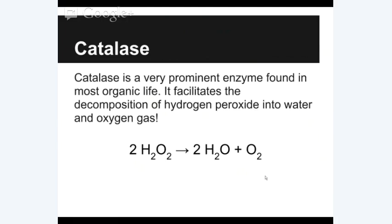One of the enzymes found in the liver is catalase — though it's not just found in the liver. Catalase is a very prominent enzyme found in most organic life. It facilitates the decomposition of hydrogen peroxide into water and oxygen gas. In the chemical reaction, 2H₂O₂ (hydrogen peroxide) on the left yields 2H₂O (two water molecules) and one O₂ molecule on the right. This is a decomposition reaction taking one reactant and breaking it into two products. The oxygen is released as gas, producing visible bubbles.